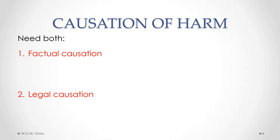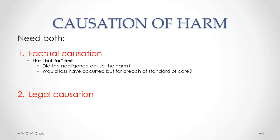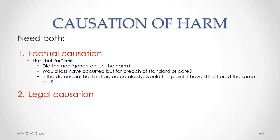The plaintiff needs to show both types of causation. Factual causation is determined by applying the so-called but-for test. Another way of phrasing it is: did the negligence actually cause the harm? Or would the loss have occurred but for the breach of the standard of care? If the defendant had not acted carelessly, would the plaintiff have still suffered the same loss? We need to find some kind of factual connection that the negligence caused the loss or injury being complained about.